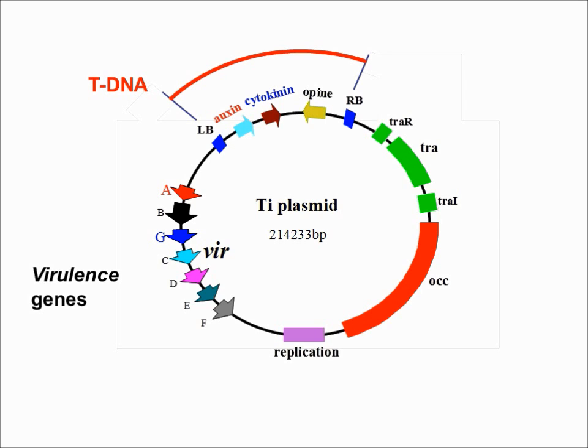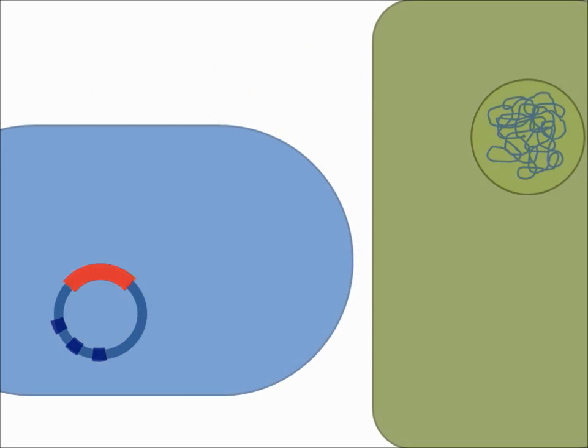This causes the plant cells to proliferate and produce molecules that the agrobacterium can use for energy. The first step of this transfer occurs when the proteins encoded in the virulence D genes nick and cleave the T-DNA and also covalently attach to the 5' end of the T-DNA strand.